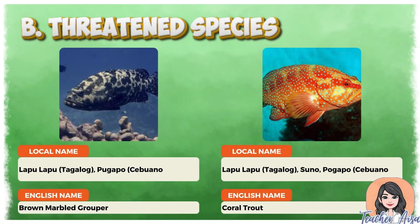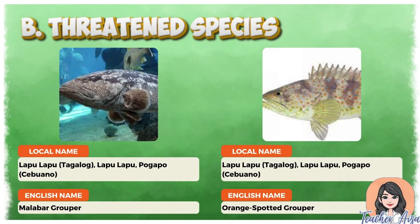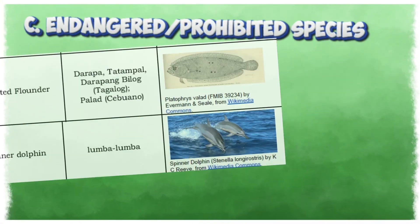Here are the threatened species of fish. Lastly, here are the endangered or prohibited species of fish.